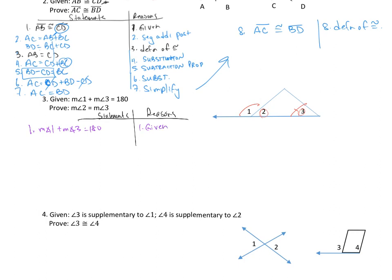Step one: the measure of angle one plus the measure of angle three equals 180 — given. Now what can I say with one and three? There's not much I can conclude. So let's look at what I've got to prove — something about the measure of angle two. I know that this is a straight line and these angles form a linear pair. So step two: the measure of angle one plus the measure of angle two equals 180, by definition of supplementary, or linear pair.